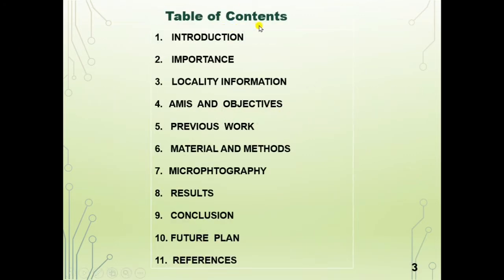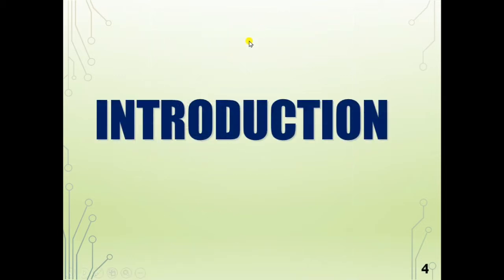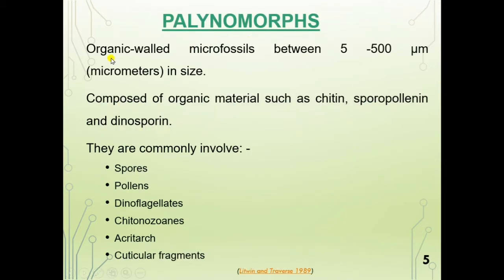This slide shows the table of contents. Palynomorphs are organic-walled microfossils between 5 to 500 micrometers in size. Palynomorphs are composed of organic materials such as chitin, sporopollenin, and dinosporin. Palynomorphs commonly include spores, pollens, dinoflagellates, chitinozoans, acritarchs, and cuticular fragments.